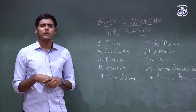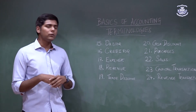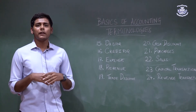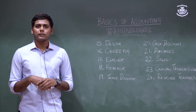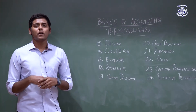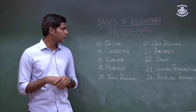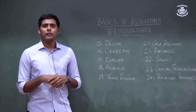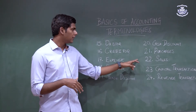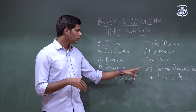Revenue is any income generated from the normal operating activities of the company — the main source being the sale of goods and services. Trade discount is the discount offered by the seller on the listed price of goods and services; an important point is that trade discount is never recorded in the books of accounts. Cash discount is the discount given for the prompt payment of goods and services, and cash discount is usually recorded in the books of accounts. Purchase is the buying of goods and services for the purpose of resale or for use in the manufacturing process. Sale is any income generated by selling goods and services to a third party.